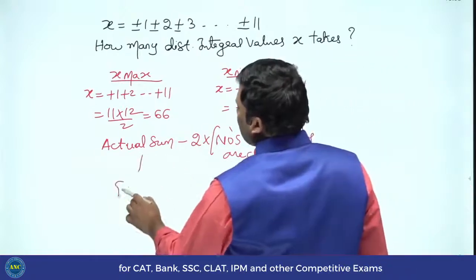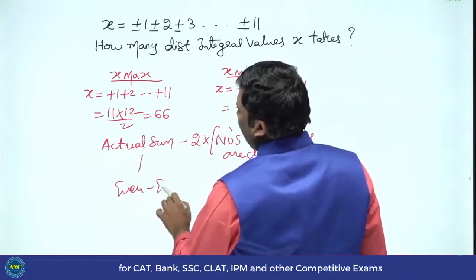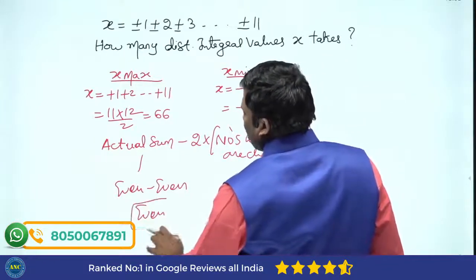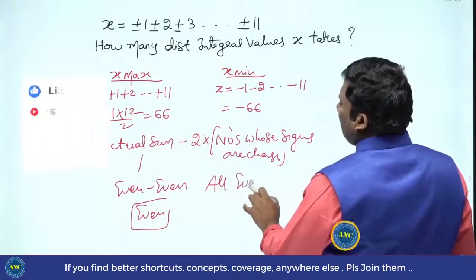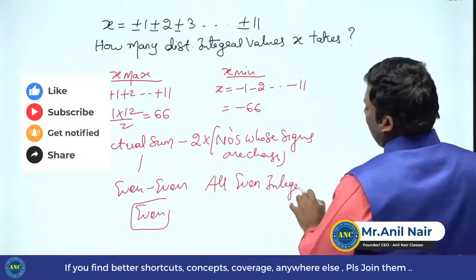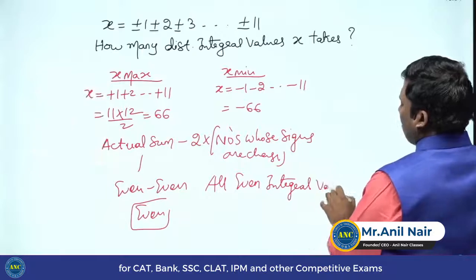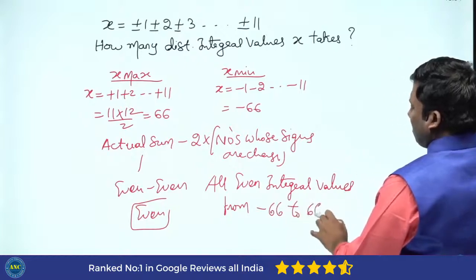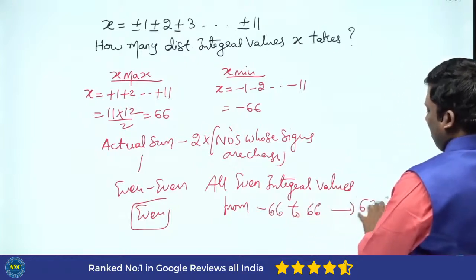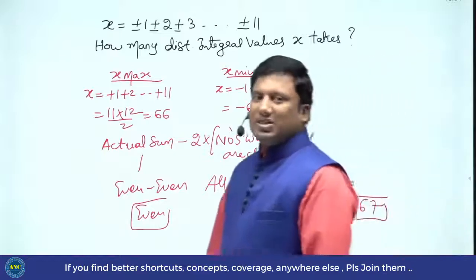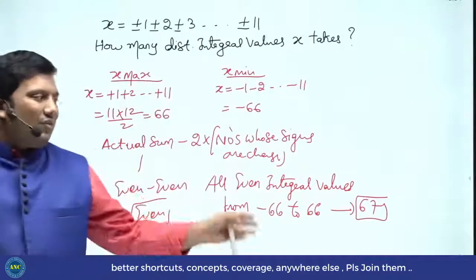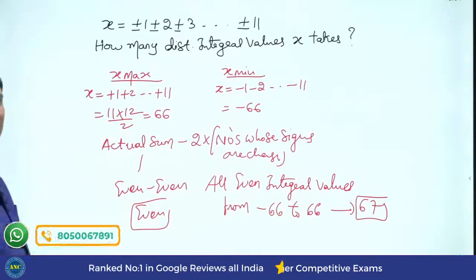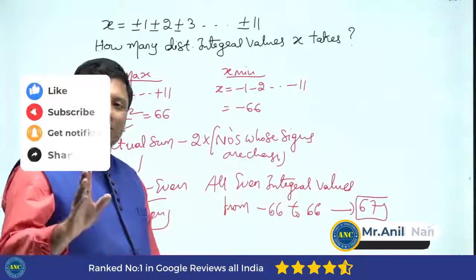Since the actual sum is even and 2 times any number is also even, even minus even is always even. Therefore, the answer is all even integral values from minus 66 to plus 66. There are 133 values in total in that range, of which 67 are even and 66 are odd. The idea is clear.